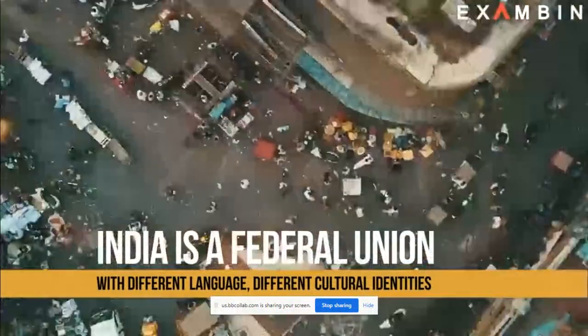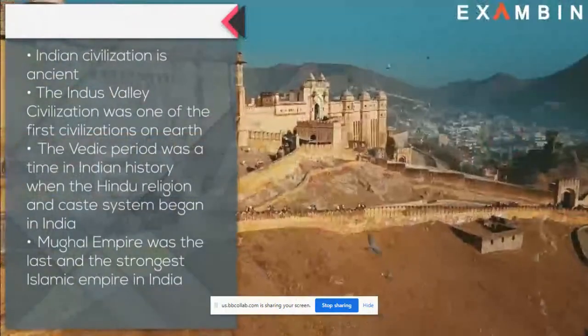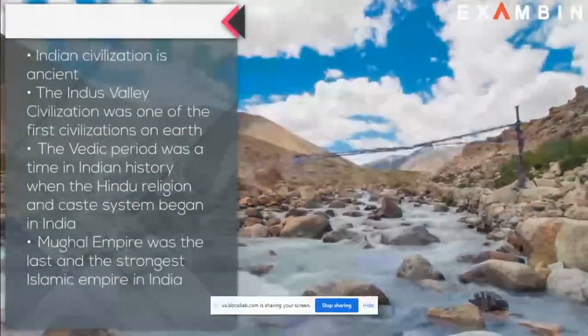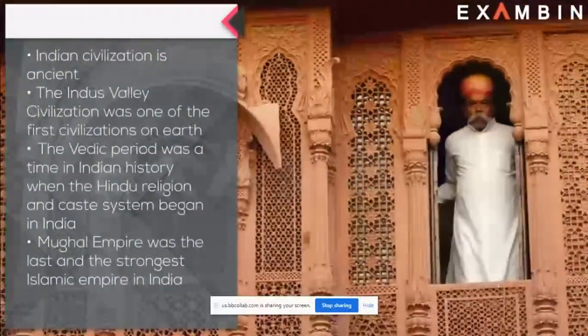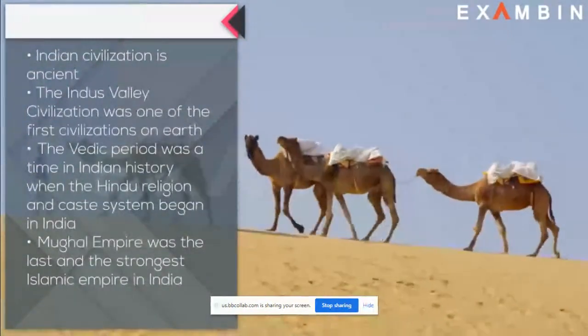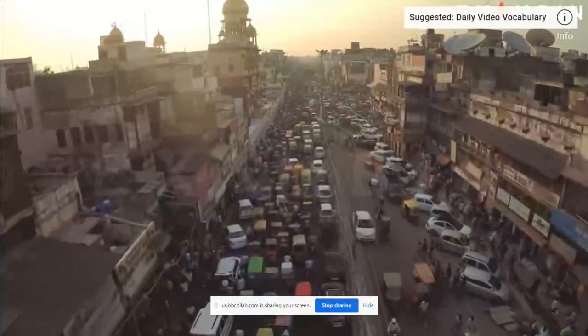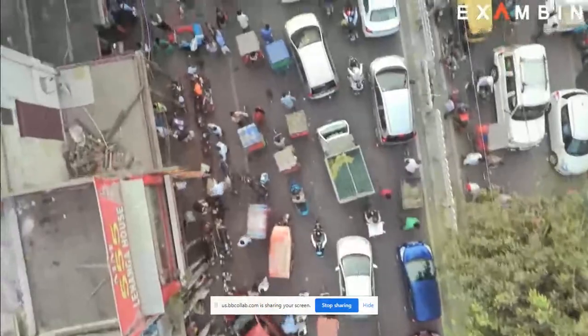Like the United States, India is also a federal union where almost all of its states carry different languages and different cultural identities. Indian civilization is very ancient. The Indus Valley civilization was one of the first civilizations on Earth. The Vedic period was a time in Indian history when religion and the caste system began. The Mughal Empire was the last and strongest Islamic empire. Because of this unity through diversity and different cultural identity, India is known as a subcontinent.